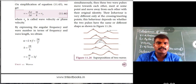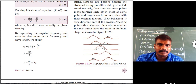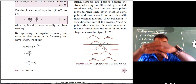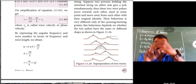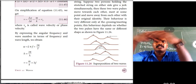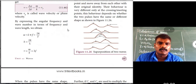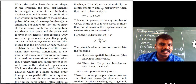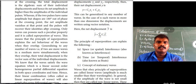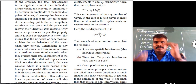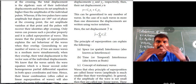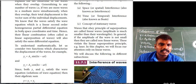At the meeting point the amplitude is maximum — greater than the individual amplitude of each pulse. However, if two pulses have the same amplitude but are 180 degrees out of phase, at the crossing point the summation results in zero — the amplitude becomes zero.